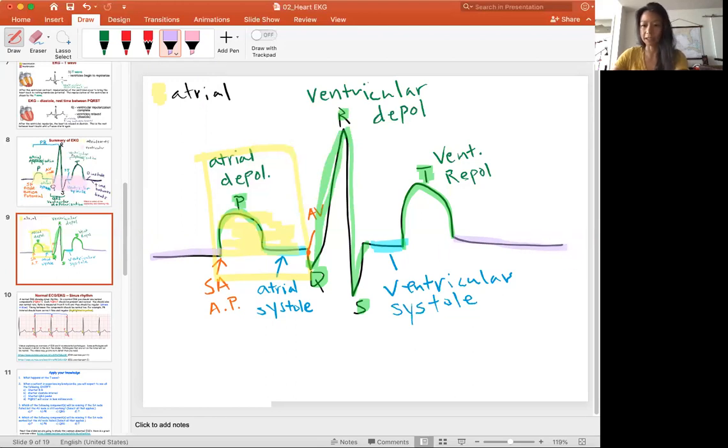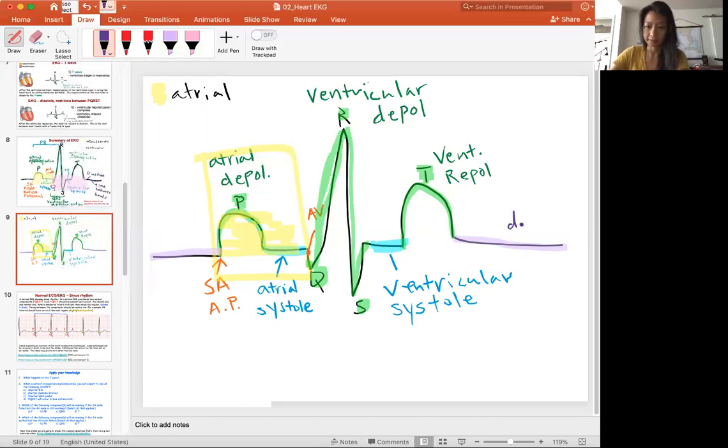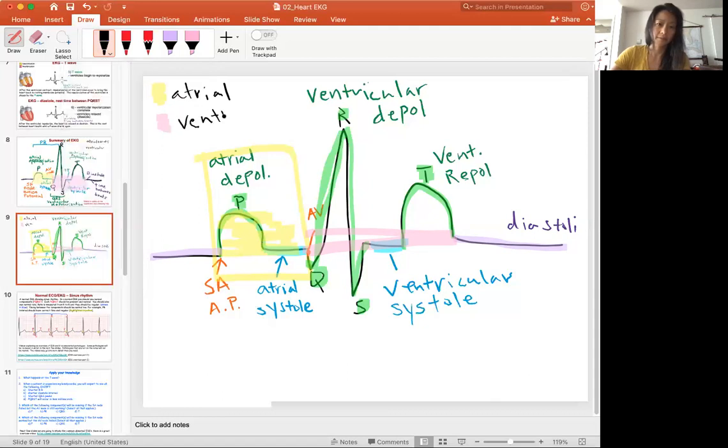That's when all the rest period. So if I keep on drawing this ECG, there'll be another PQRST, PQRST. You can see that until the next P wave is the resting period. So that will be diastole. And then this part from here where AV starts all the way to the end of T, just highlighting in pink here, is the ventricular event.